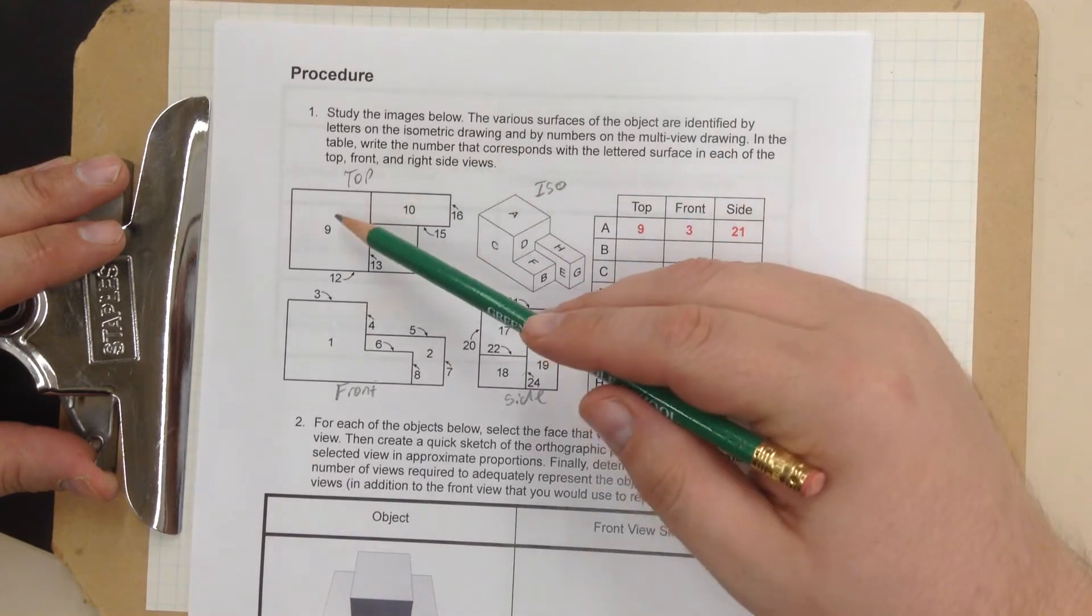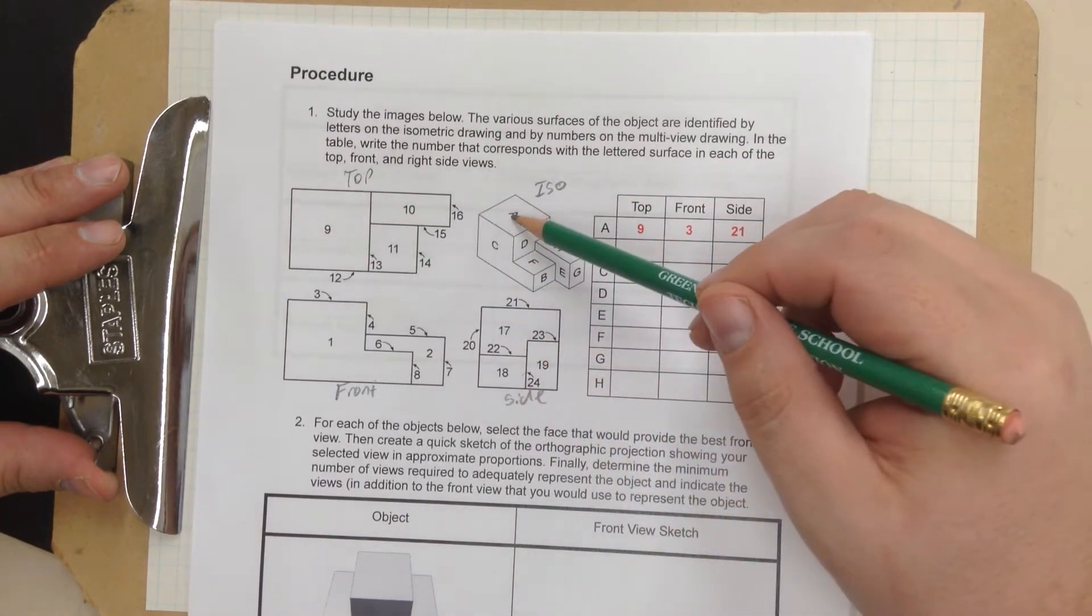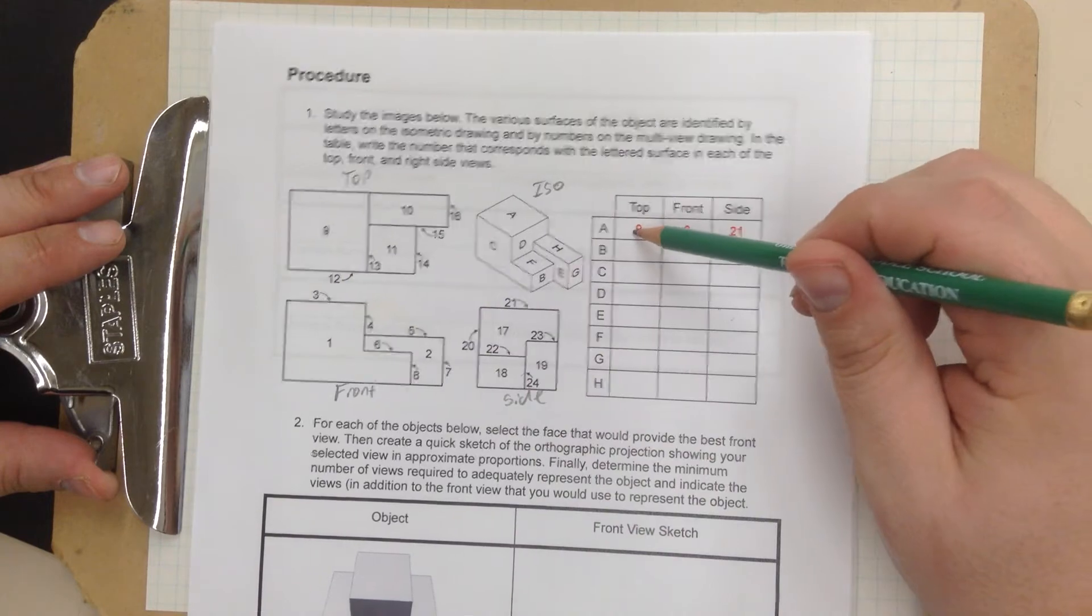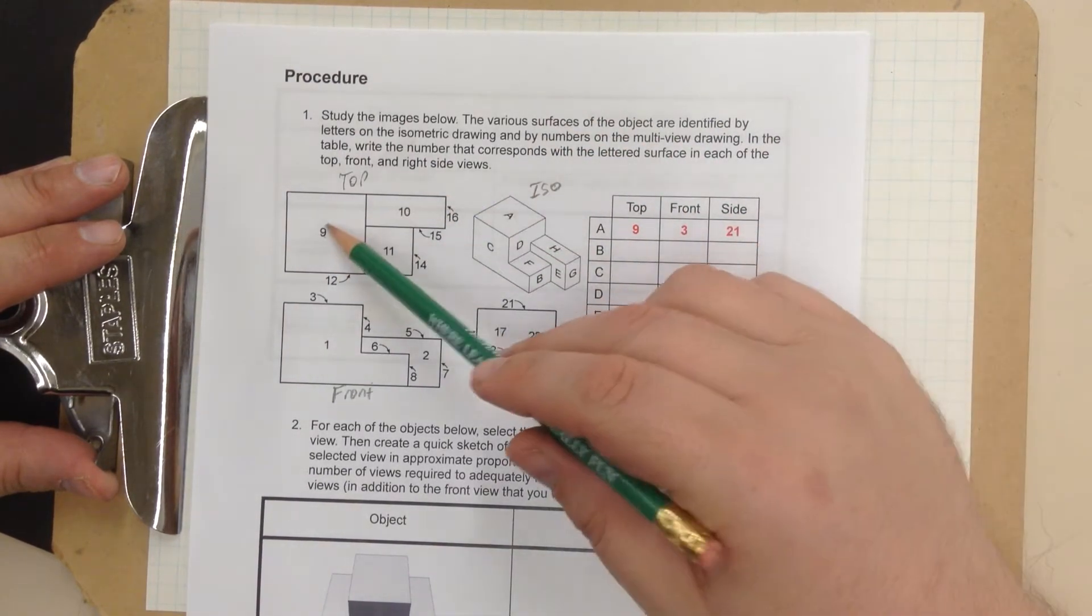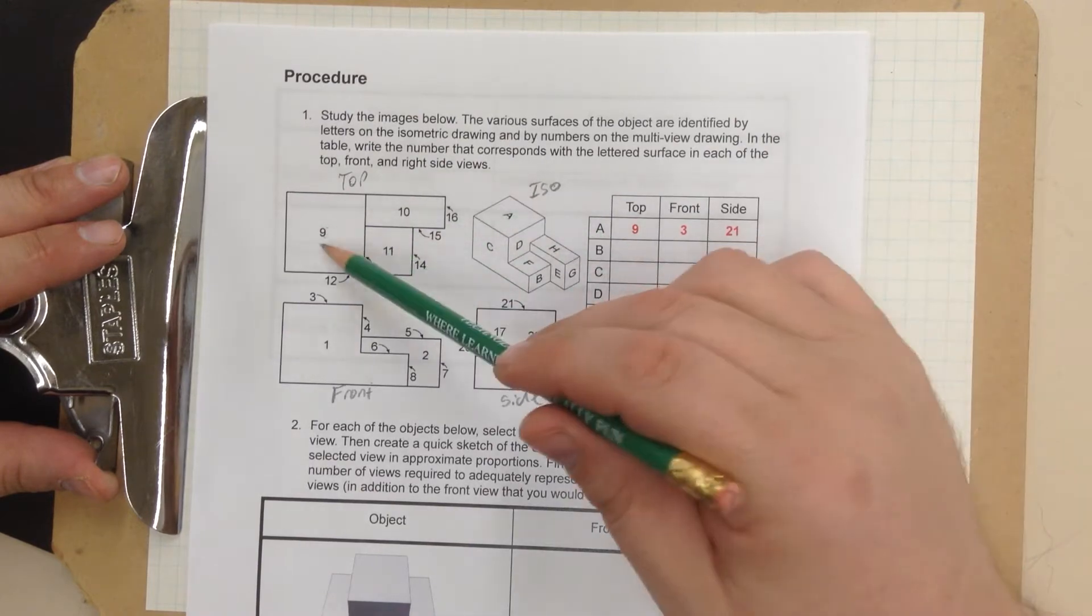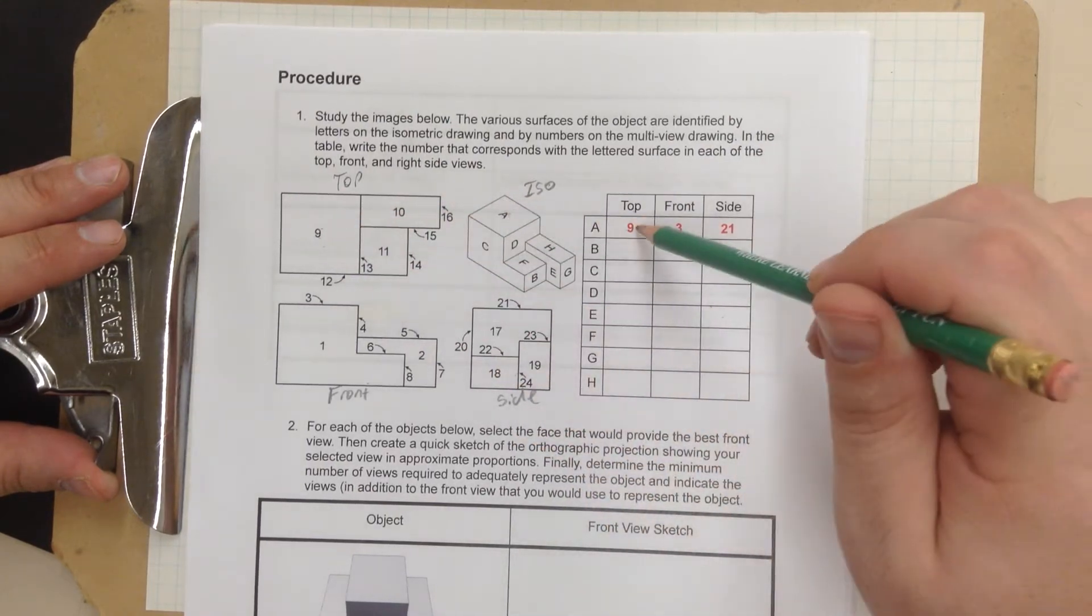So, A. If I look at the top version of A, there's A. There's number 9. They place number 9 right there. Okay, so A, number 9. That is the same part in this drawing. And they place number 9.